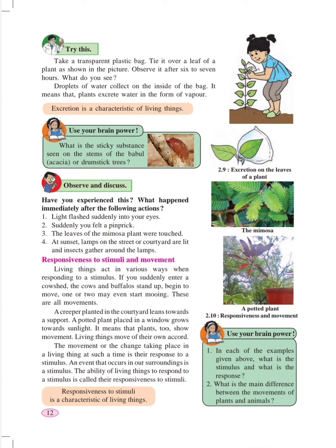Responsiveness to stimuli and movements — plants like the mimosa plant, which we call lazuli, if you touch it, the leaves suddenly close off. This is responsiveness: it responds when given a touch. If you plant a creeper or climber, it will try to grow towards the support closer to it. Responsiveness to stimuli is a characteristic of living things.